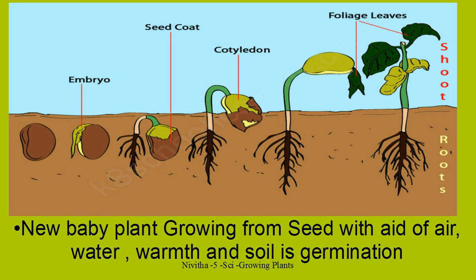When the foliage leaves crop up, they are able to do photosynthesis — from sunlight, air and water, they can prepare their own food. This has to happen because all the food stored in the cotyledon has been finished off, absorbed by the root and shoot. So the foliage leaves come up and these leaves produce food, and using this food the plant starts growing. This is how germination happens from a seed to a seedling.